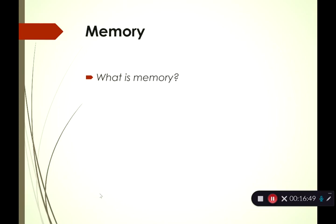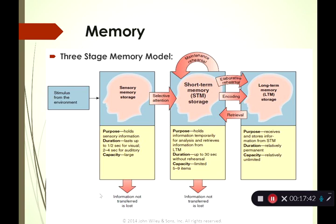Let's move into our second topic: memory. First, let's remember — memory is not a perfect recollection. It is not like hitting rewind and play; your memory is not a series of YouTube videos. Memory is reconstructive. You think to yourself what you did yesterday and you reconstruct the events — it's not perfect, and we make a lot of mistakes with our memory. Our well-accepted three-stage memory model is composed of sensory memory, short-term memory, and long-term memory.